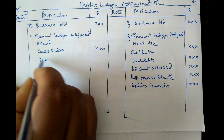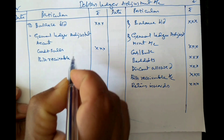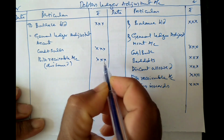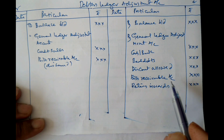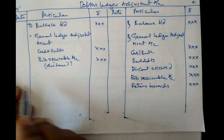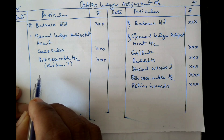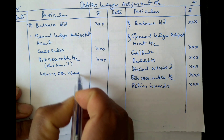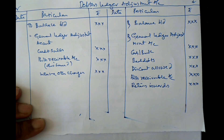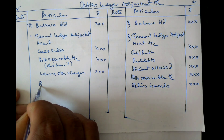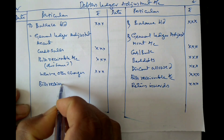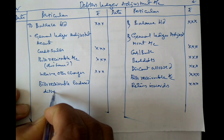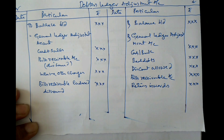There may also be Bills Receivable — specifically, Bills Receivable dishonored. Dishonor must be taken to the debit side of the Debtors Ledger Account. The bills received during the year are taken to the credit side, but if there is any dishonor, that must be taken to the debit side. There may also be charges debited, such as interest and other charges. If any items are charged to the debtors, they must be taken to the debit side. Additionally, bills receivable endorsed and dishonored must also be taken to the debit side of this account.